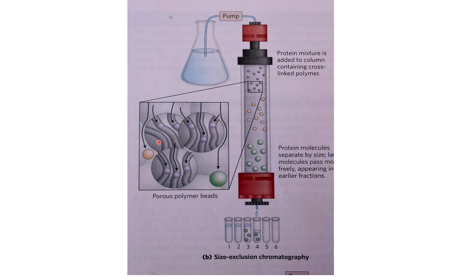Size exclusion chromatography uses pores of a certain size — proteins above that pore size are excluded and elute first, followed by medium-sized and then small proteins. If you know the size of a given protein, size exclusion can provide effective separation. It is also possible to couple ion exchange and size exclusion chromatography in series, though generally one method will be sufficient.